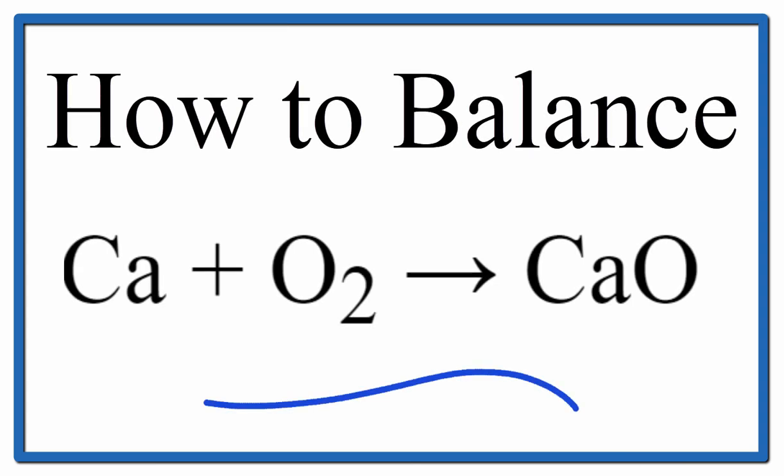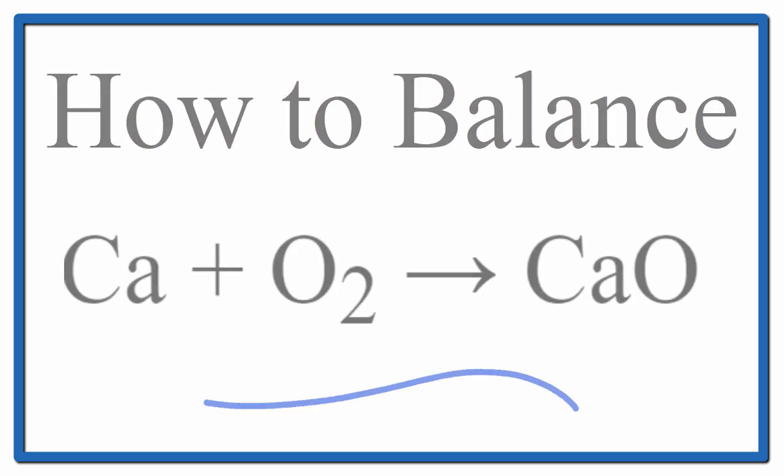To balance this equation, Ca plus O2 yields CaO. Let's count the atoms on both sides of the equation.